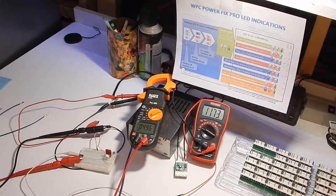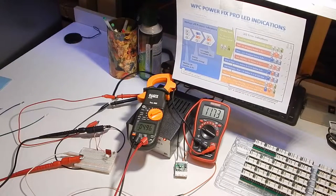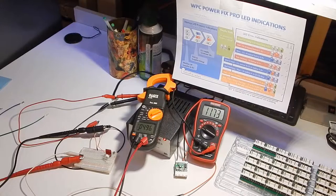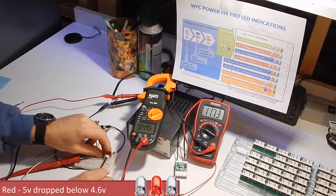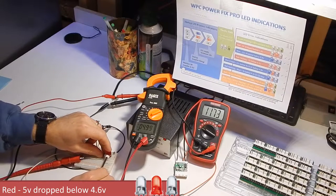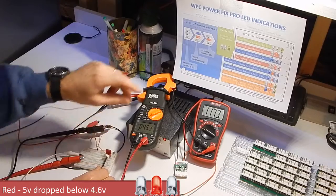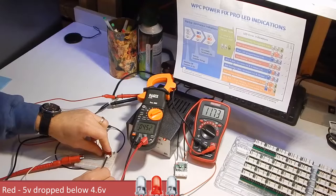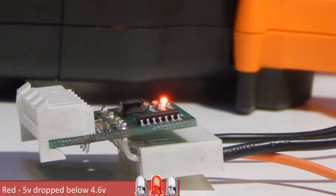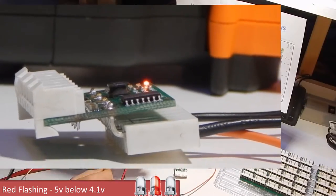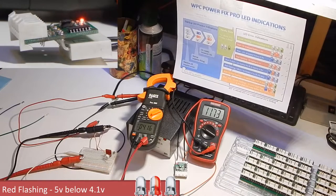This time we're going to get to the second, the fourth, and the sixth state in the list by dropping the 5-volt line below 4.6 and then down to 4.15. There we go. So let's drop it a little low first. Okay, there's the solid red, so that is state two. Let's drop it a little lower, that's barely above 4 volts. You can see the blinking, so that's the second state there, or the fourth state on the list, the flashing red.